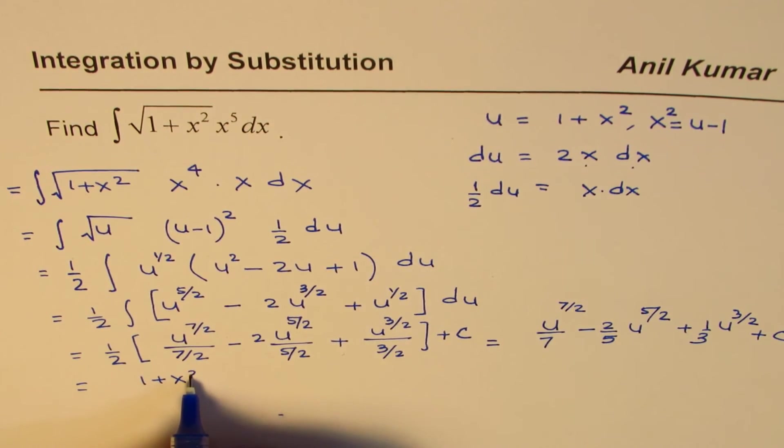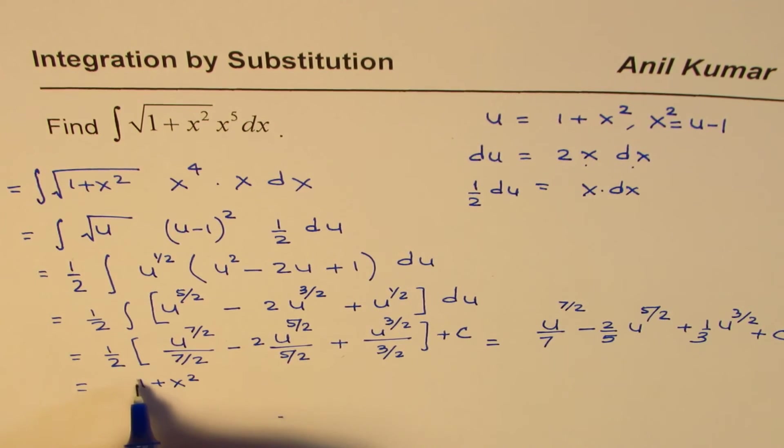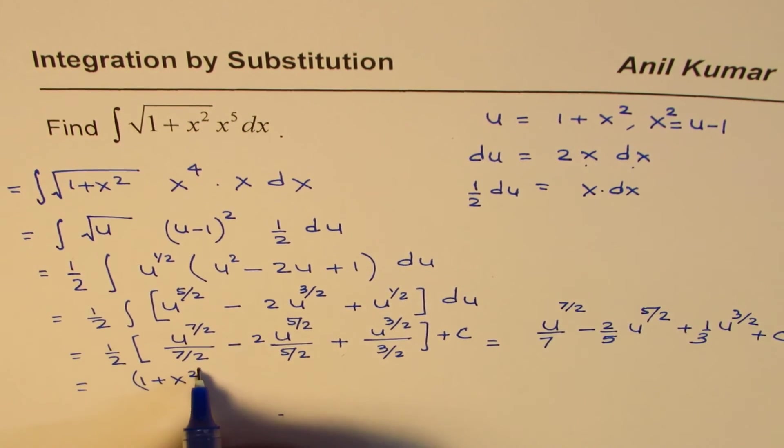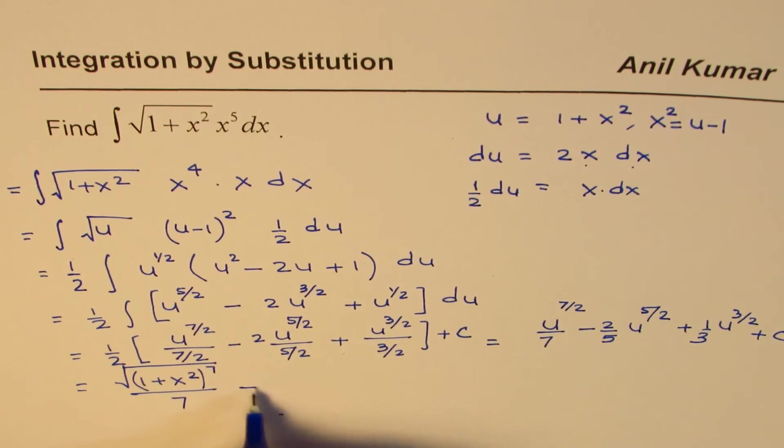Either way you could write it in this form also: to the power of 7 and then square root, you could do that, over 7.